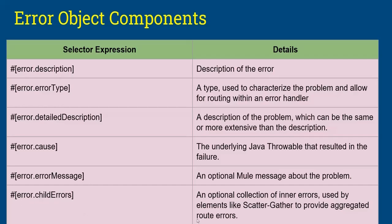The 'error.childErrors' field gives you an optional collection of inner errors. For example, the scatter-gather component — which executes multiple flows in parallel — uses this error detail. So 'error.childErrors' is very useful in scatter-gather flows.